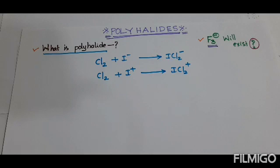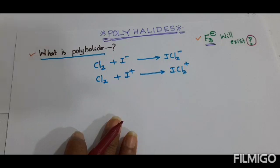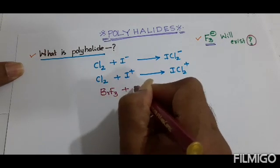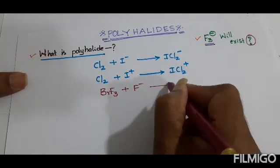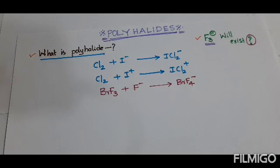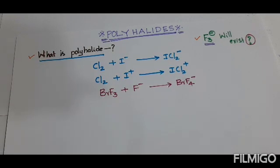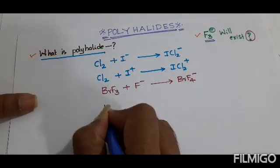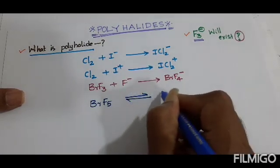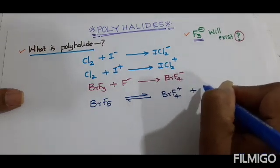Polyhalides are also formed by the interaction of interhalogen compounds. For example, BrF3 when it combines with F⁻ forms BrF4⁻. Polyhalides are also formed by the self-ionization of interhalogen compounds — for example, BrF5 self-ionizes to form BrF4⁺ and BrF6⁻.